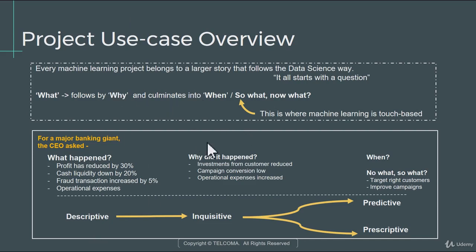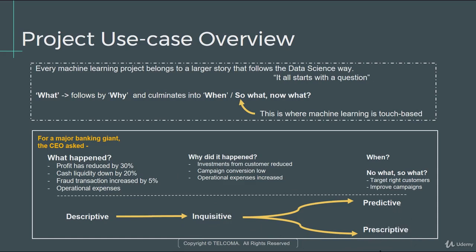We can define this with simple terms. When an activity primarily focuses on understanding what happened, we associate that as descriptive analysis. When you try to understand why it happened, that is inquisitive analysis. From inquisitive analysis, you might move to either predictive analytics or prescriptive analytics. Prescriptive analytics is not a separate branch — it includes predictive analytics within it; predictive analytics is a subset of prescriptive analytics.